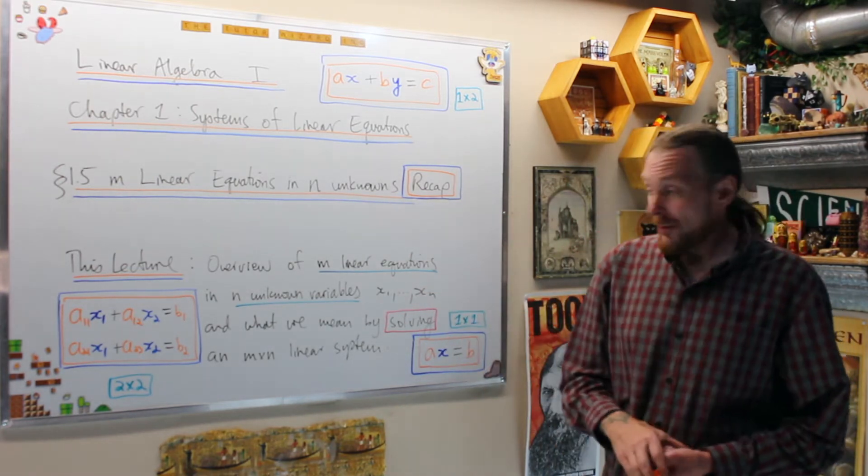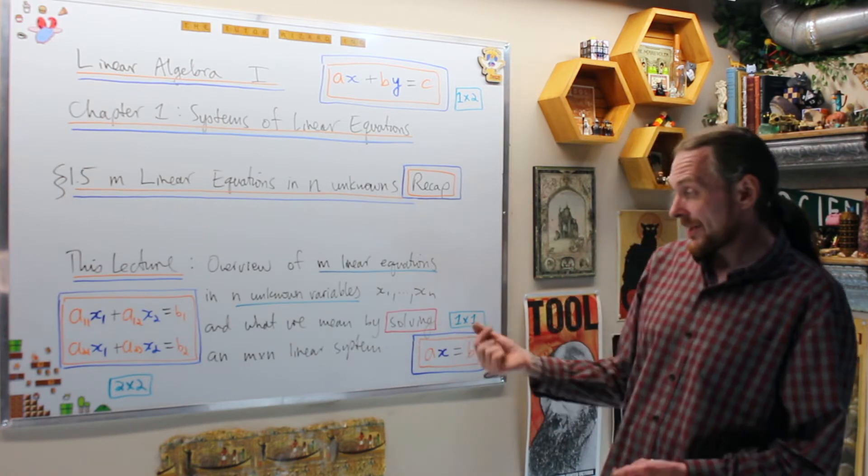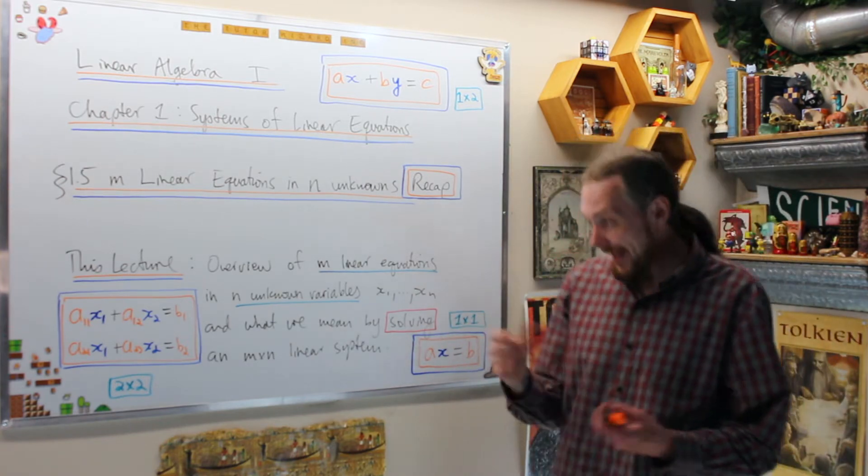This lecture, what we're going to do is an overview of M linear equations and N unknown variables and what it means to solve an N by N linear system.